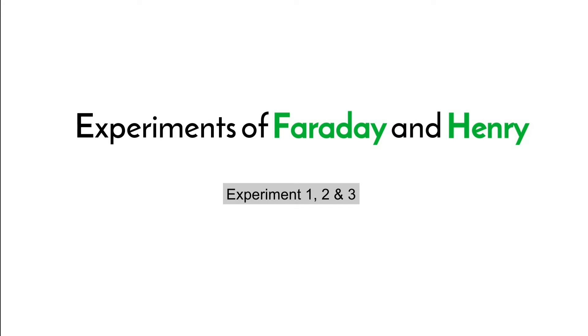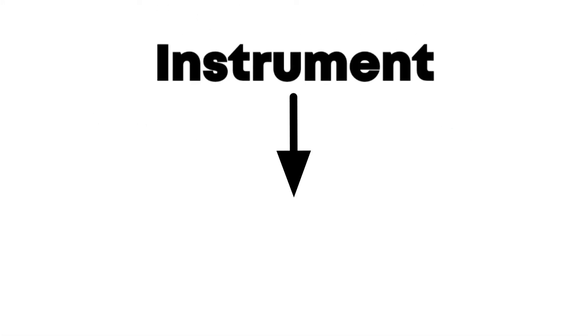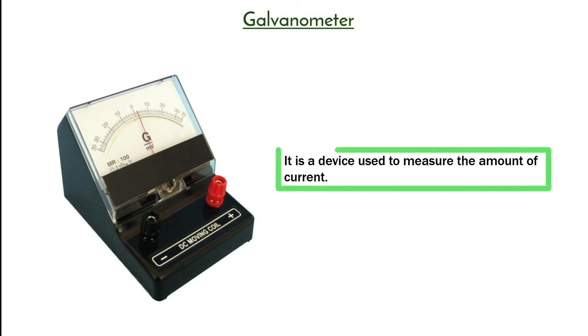Hello guys, welcome to my new video. In this video I will be talking about experiments done by Faraday and Henry. They both performed three experiments, namely experiment number one, two, and three. In all three experiments they used an instrument called a galvanometer. A galvanometer is an instrument which measures current.